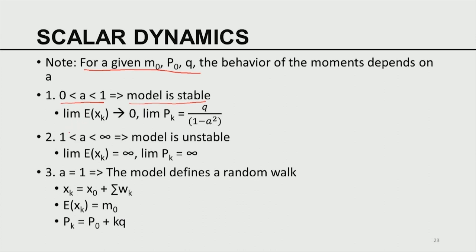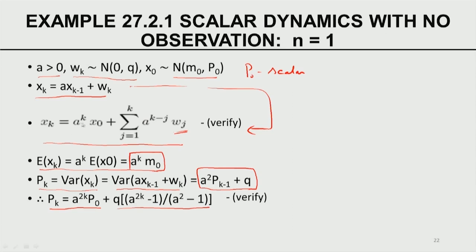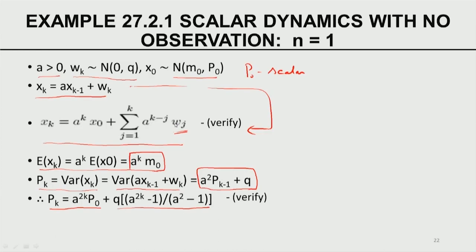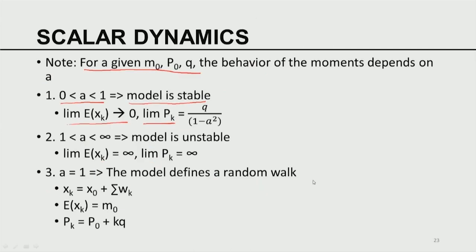It can be shown from the solution of the model equation that the limit of X_K as K goes to infinity is 0, and the limit of P_K is also given by that expression. So the limit of X_K and the limit of P_K are given by the equations I would like to call star and double star. If A is finite but greater than 1, the model is unstable: the limit of X_K goes to infinity and the limit of P_K also goes to infinity. When A is equal to 1, the model defines a random walk.